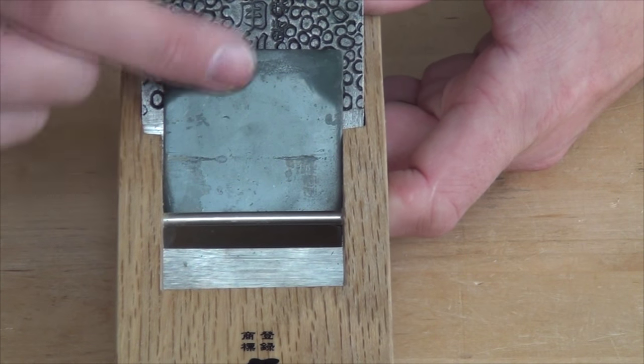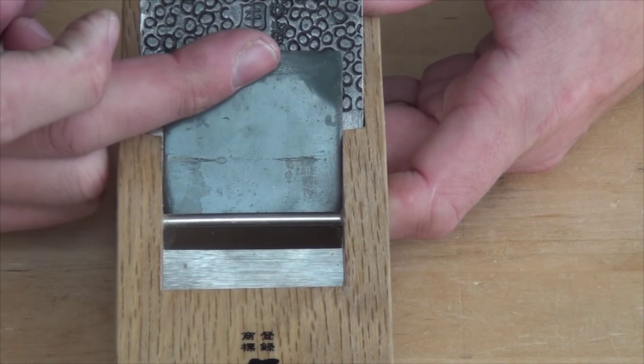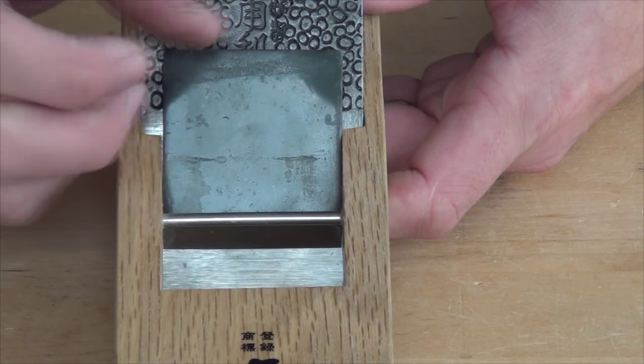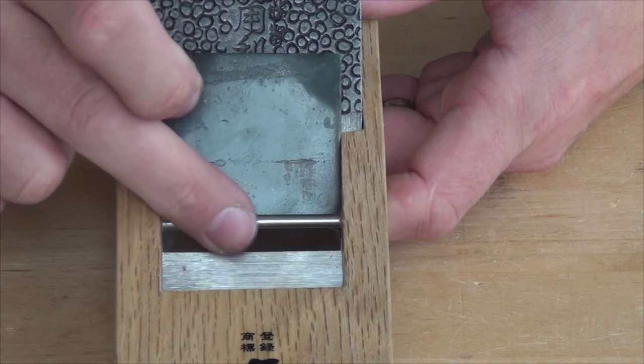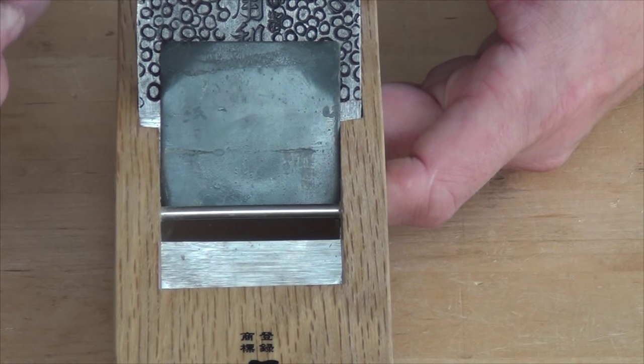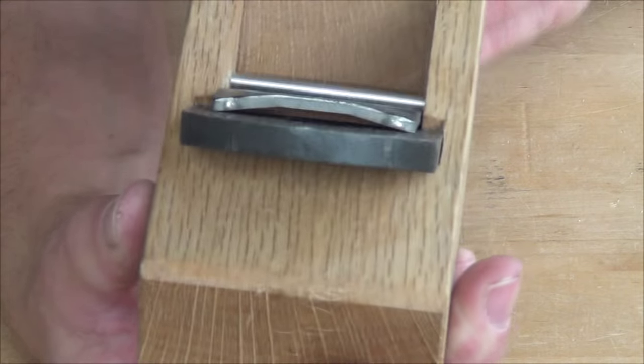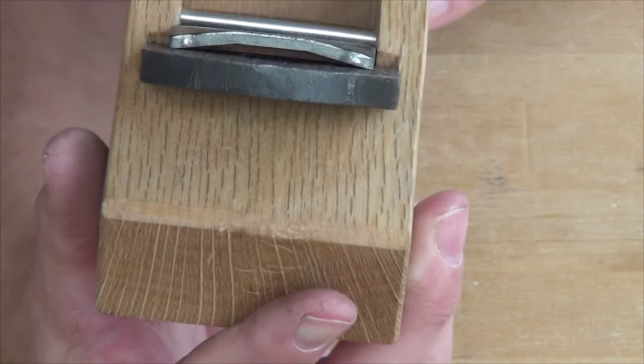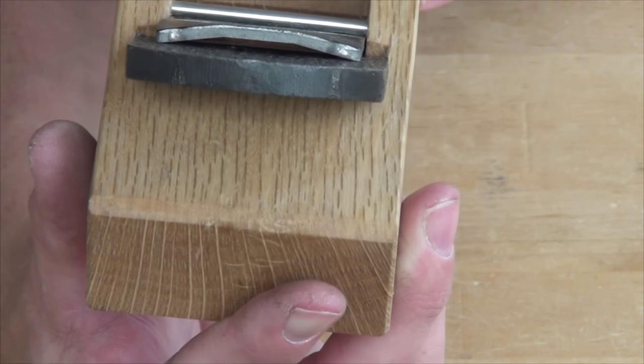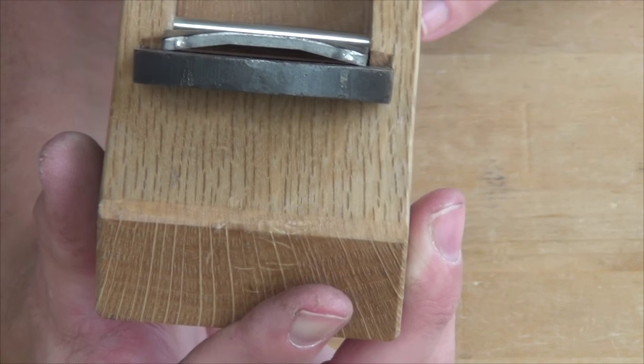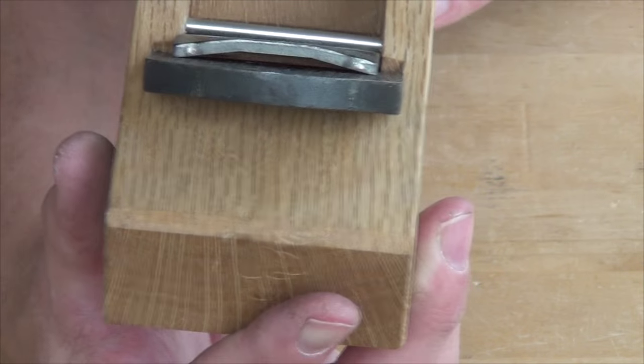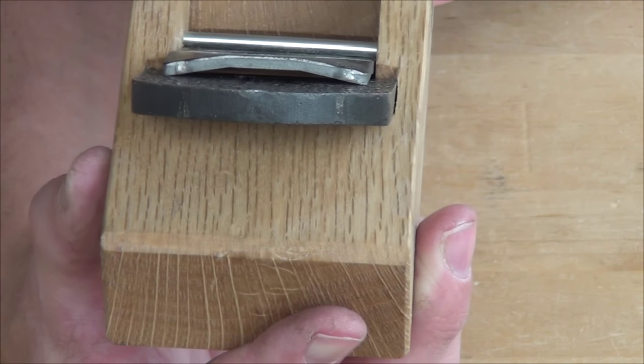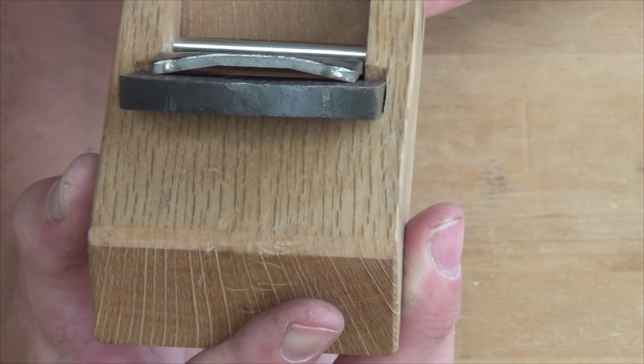You will notice at the moment it's way too far up in the plane. It's already wedging tight, but it's a long way away from the edge of the blade. And also, whether you can see down there, but there's light coming through between the chip breaker and the blade. So we need to prepare the back of the chip breaker so it's a perfect match to the blade.